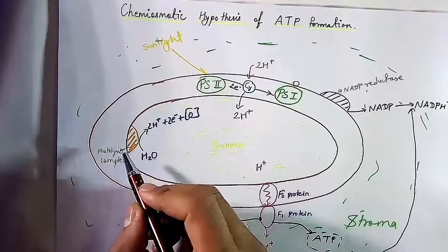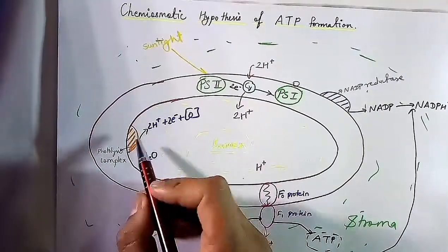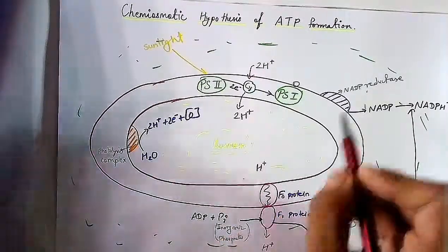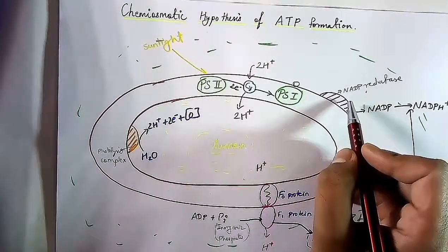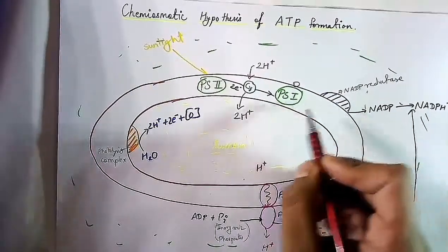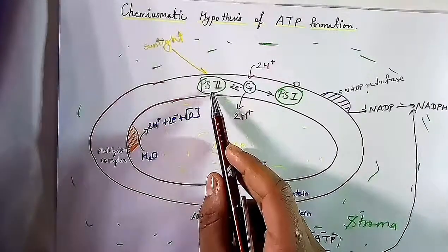This is the photolysis complex and it is situated in the inner side of the inner membrane of the thylakoid. And this is NADP reductase, which is present on the outer side of the outer membrane of the thylakoid.